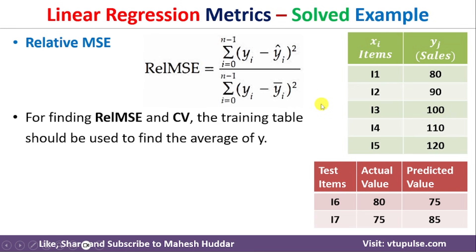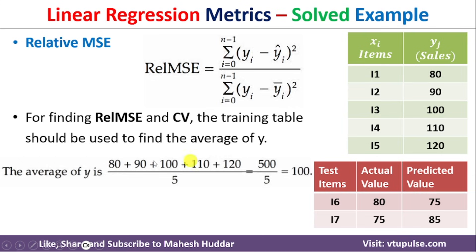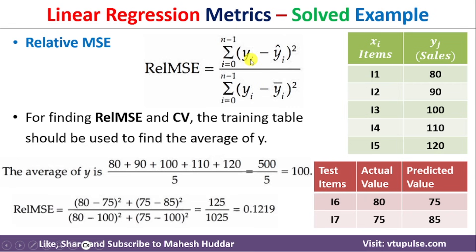The mean of the five training examples is (80 + 90 + 100 + 110 + 120) / 5 = 500 / 5 = 100. Substituting into the formula: numerator = (80 − 75)² + (75 − 85)² = 125; denominator = (80 − 100)² + (75 − 100)² = 400 + 625 = 1025. So Relative MSE = 125 / 1025 ≈ 0.122. This error is calculated relative to the training examples.